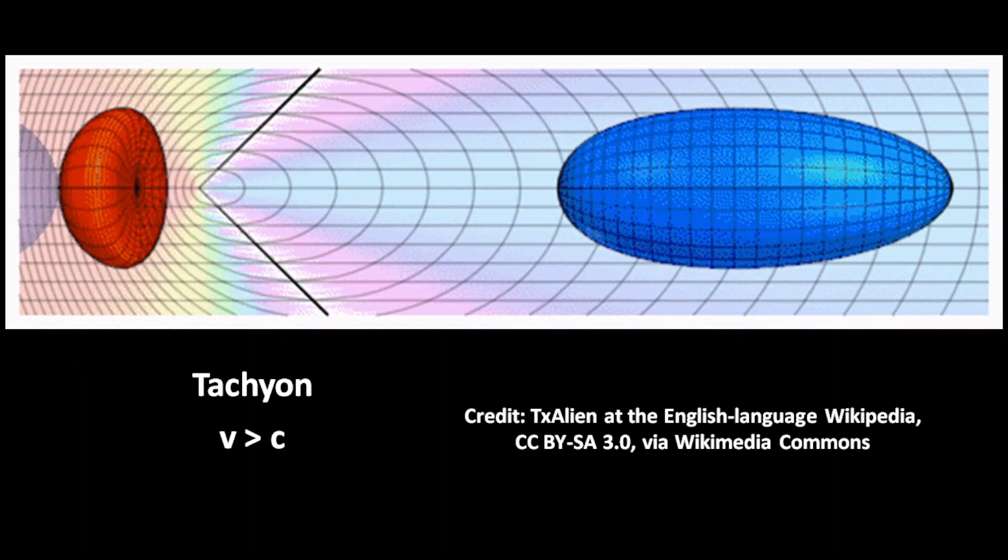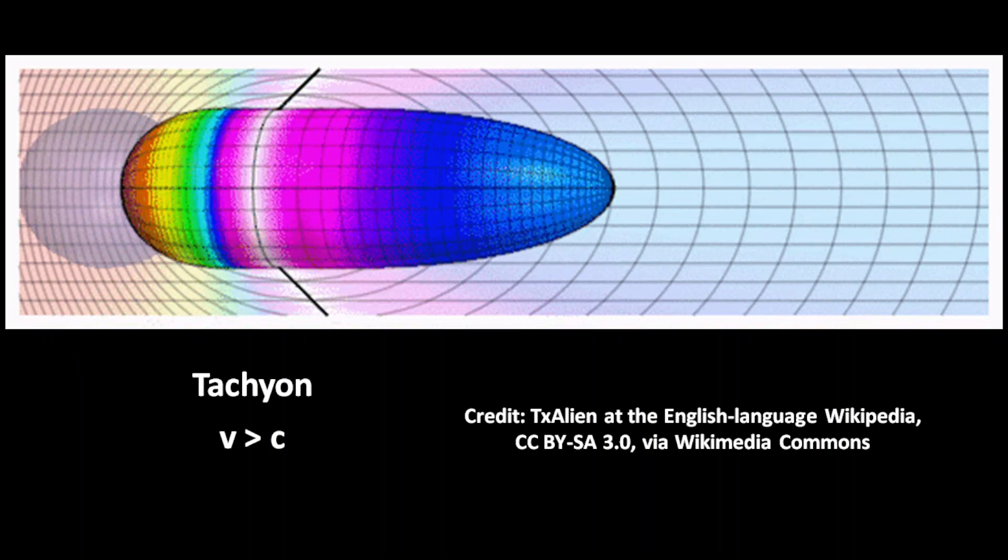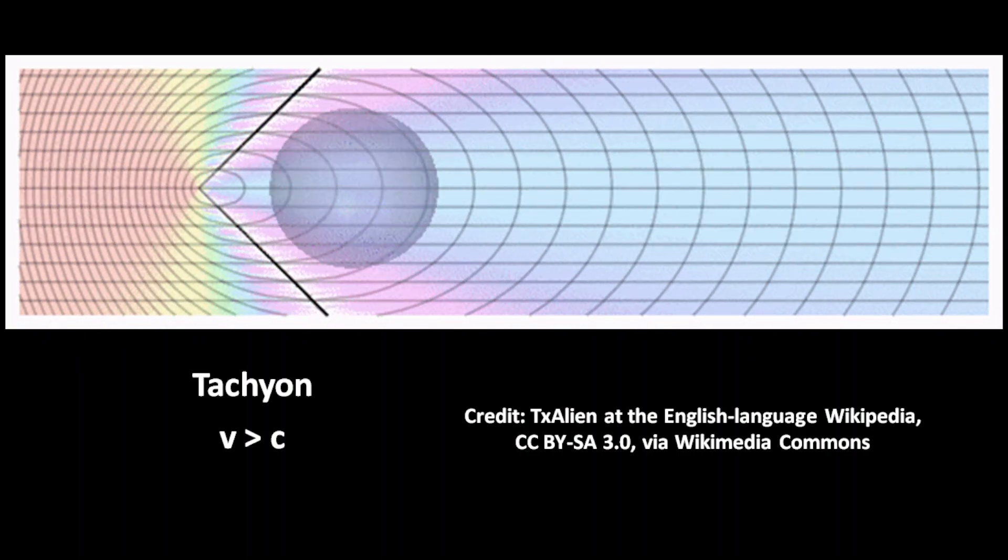This is a visualization of a tachyon, a hypothetical particle that can travel only faster than light. An approaching tachyon can't be seen because of its superluminal speed.